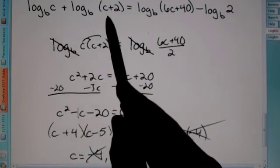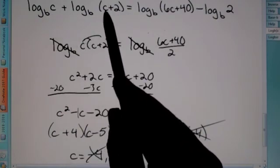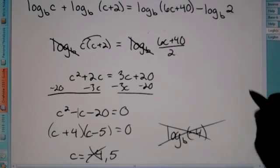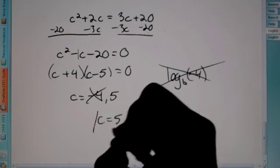But, 5 though, okay, 5 is positive here. If I plug in 5, that gives me 7. That's positive. Here, it's positive. In here, it's a 2. So, that's positive. So, our final answer is just c is equal to 5.